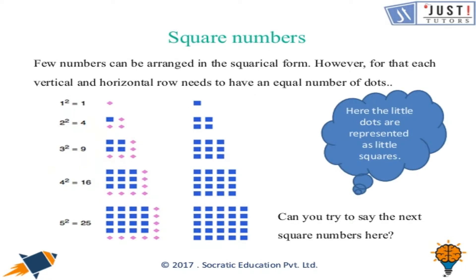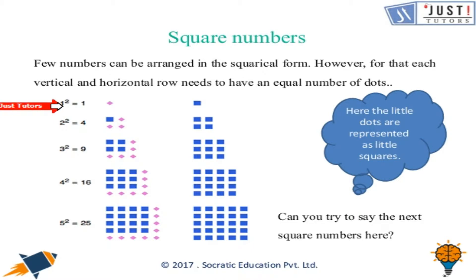Now let's talk about square numbers. You already know that when a number is multiplied by itself it gives a square number. A few numbers can be arranged in a square form; for that, each vertical and horizontal row needs to have an equal number of dots.